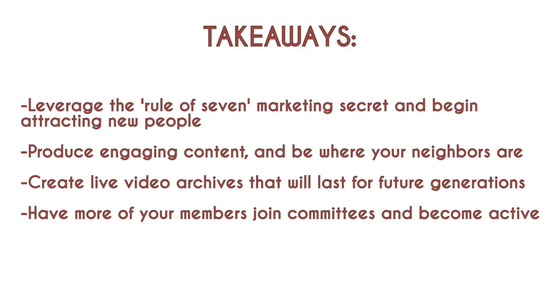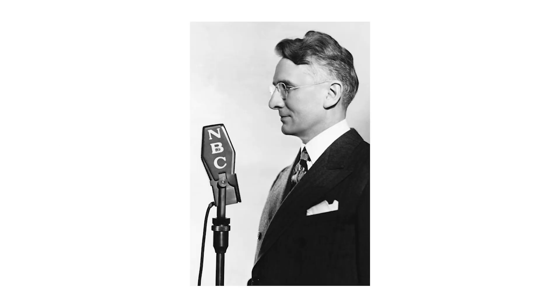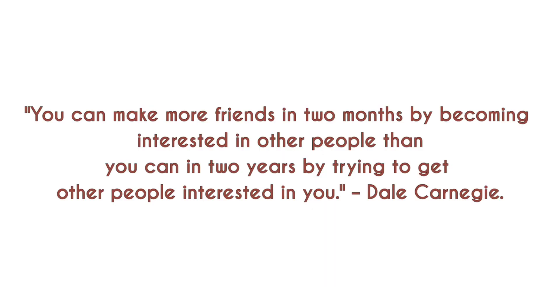Takeaways include: leverage the marketing secret rule of seven and begin attracting new people. Produce engaging content and be where your neighbors are. Create live video archives that will last for future generations. Have more of your members join committees and become active. World famous writer and lecturer Dale Carnegie once said, 'You can make more friends in two months by becoming interested in other people than you can in two years by trying to get other people interested in you.' If you are acting on issues that are in their interest, they will find you interesting and become excited to participate.